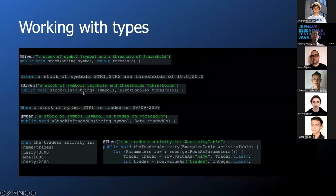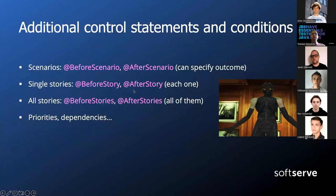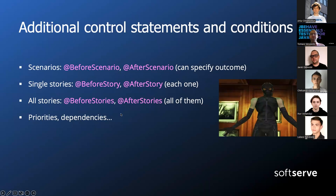We also have some additional control statements for controlling scenarios and stories and steps. This is basically like the control statements we use in JUnit where you perform certain actions after all tests are done or after a given test is conducted. We can also set priorities and dependencies — different stories can depend on each other, one can be run after another. You can do all sorts of things when it comes to actually running your stories.